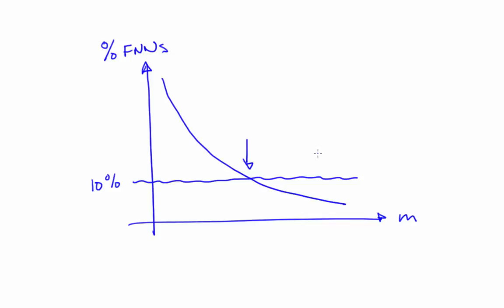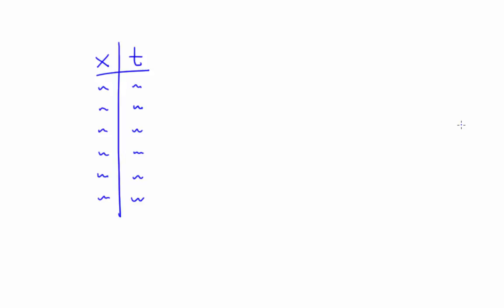A moral here: if the false nearest neighbor percent flattens out at some higher value, you should suspect noise. You might then want to use one of the noise reduction techniques from Unit 9, and repeat the false nearest neighbor calculation. Noise effects actually get worse with increasing embedding dimension — if one point is noisy and you're using embedding dimension m, that point will affect m points in the embedding, because your comb has m teeth. So you can't simply brute-force the requirement by making m big. There will be a sweet spot: too small, and the dynamics won't be properly unfolded; too big, and noise or other effects will bite you.